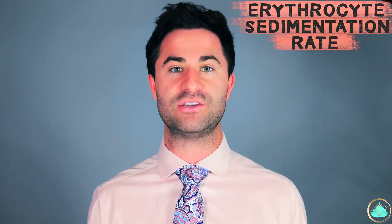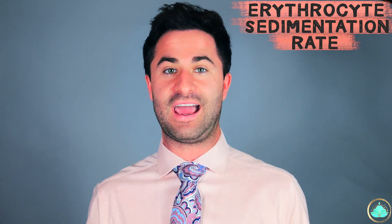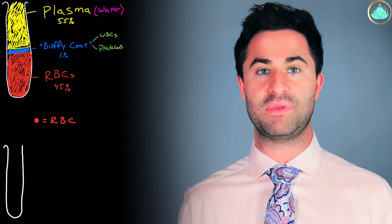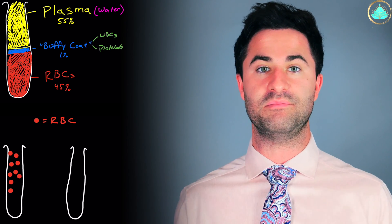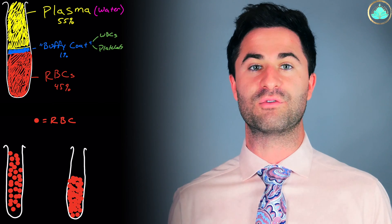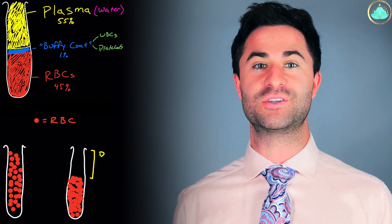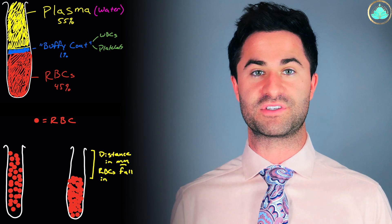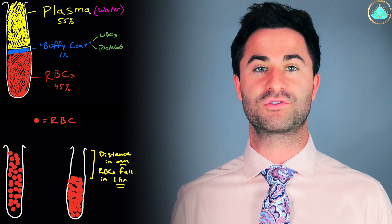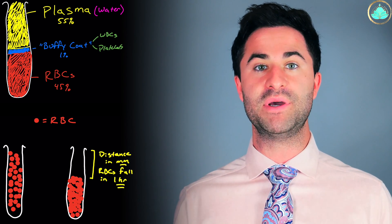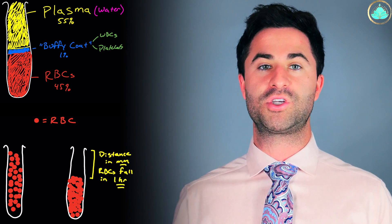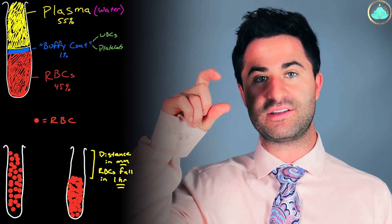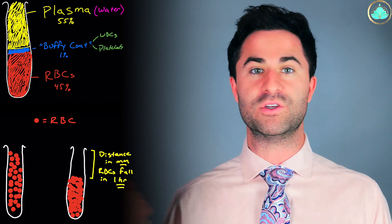The full name of a sed rate is actually erythrocyte sedimentation rate. This name very eloquently describes what the test is doing. Breaking it down: erythrocyte means red blood cell; sedimentation means falling towards the bottom of something, or settling; and rate is just the specific timeframe in which this process occurs. So putting it all together, the sed rate is the rate at which the erythrocytes — or red blood cells — fall towards the bottom of the test tube, measured in millimeters per hour.